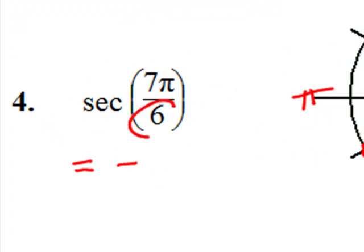And secant in quadrant three is negative. And because it's pi over six, we relate it to pi over six in quadrant one. And secant of pi over six, according to our chart, is two square root of three over three.